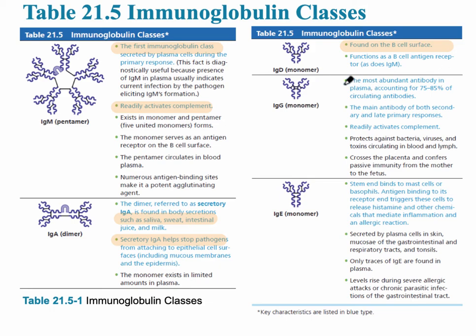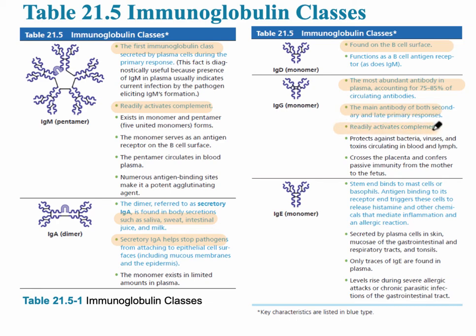For IgG, it's important to remember that it's the most abundant, accounting for about 75 to 85 percent of all circulating antibodies. It is the main antibody of both the secondary and the late primary responses, and it also activates complement — so when you hear complement, think second line of defense.